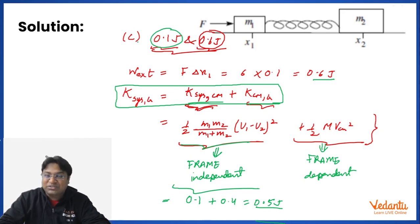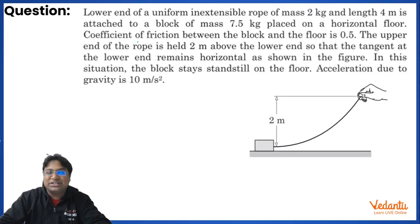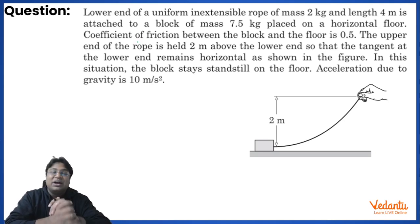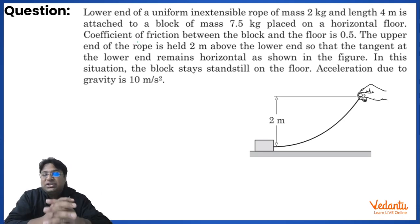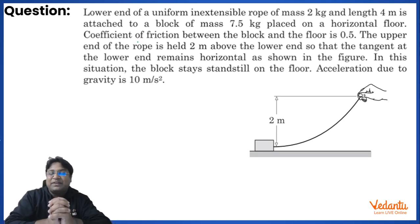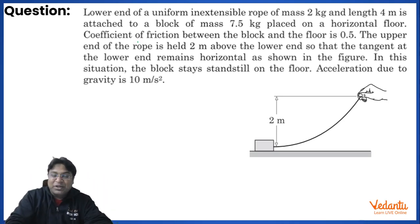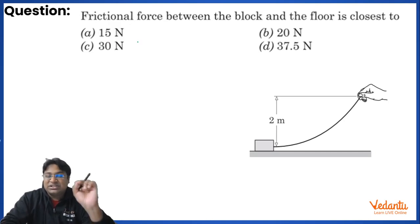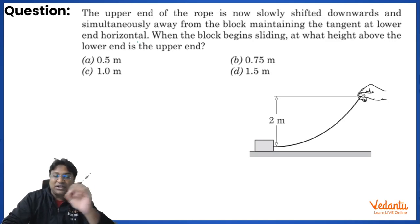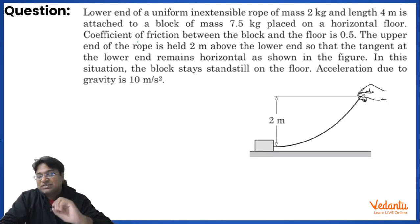Now let's move to today's question. It's a comprehension with three parts from the book 'Pathfinder' — a very popular book. The paragraph describes a uniform inextensible rope of mass 2 kg and length 4 m with a block attached. You can pause the video to attempt each of the three questions on your own before I solve them.